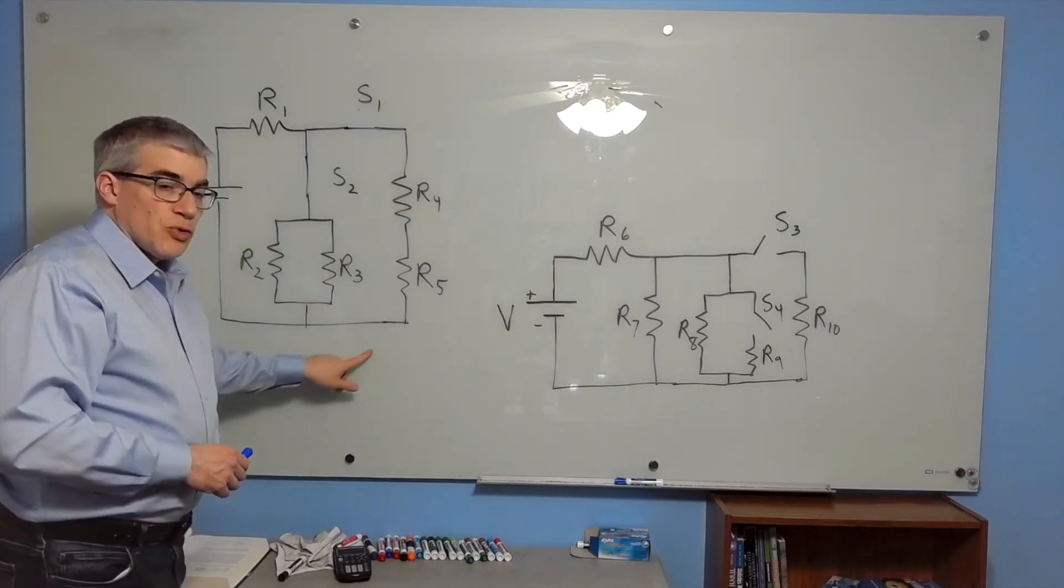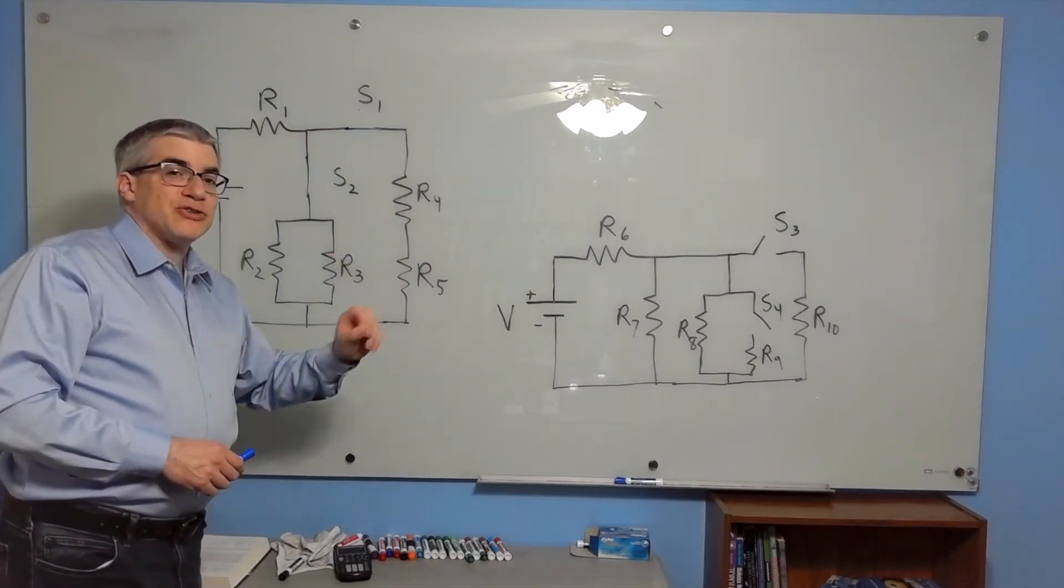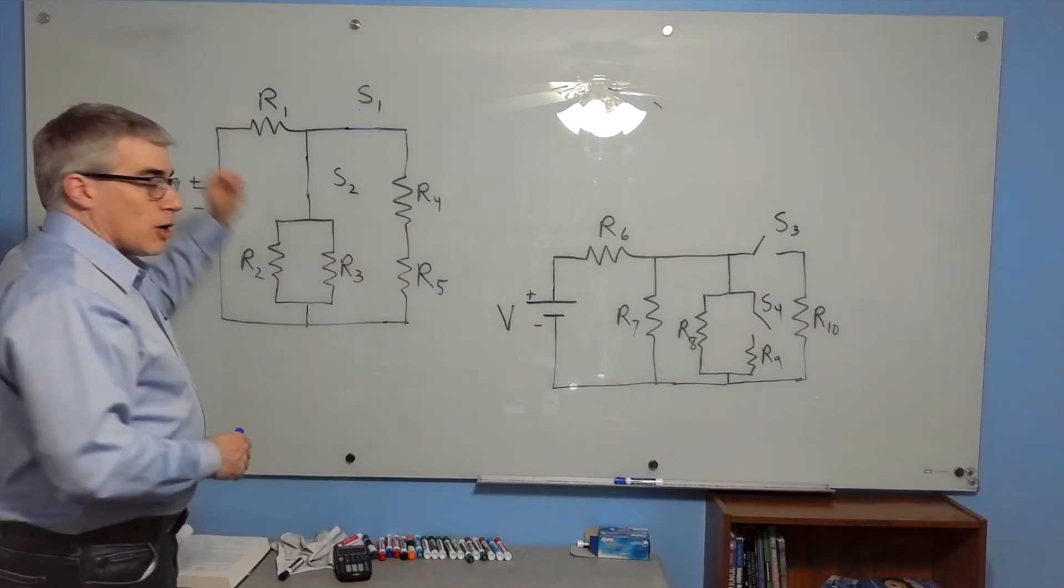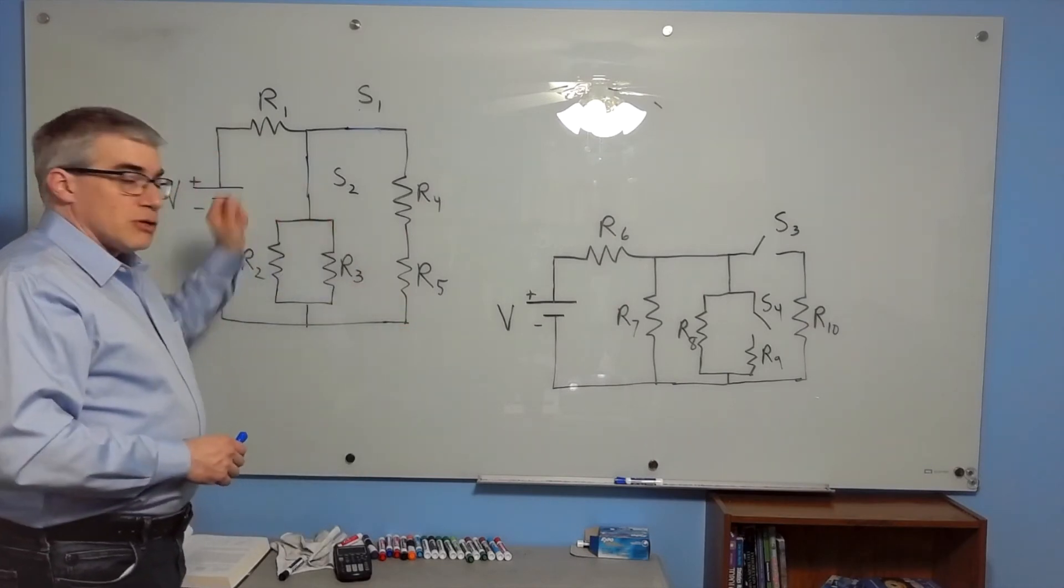less voltage for R4 and R5. R4 and R5 actually get dimmer, and R1 gets brighter when we close switch two.